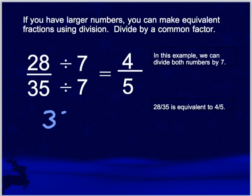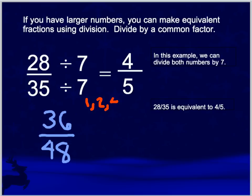Here's another example. If we had thirty-six forty-eighths, let's list out the factors of thirty-six and look for the common factor. We know one of the common factors would be two, because both of those are even numbers. The factors of thirty-six are one, two, three, four, nine, twelve, and thirty-six.